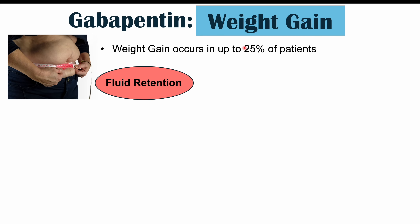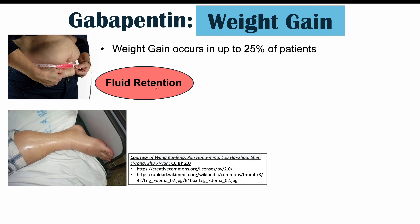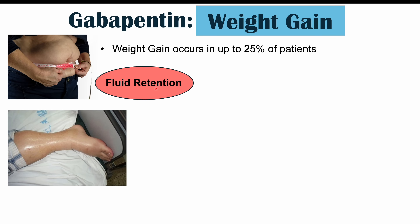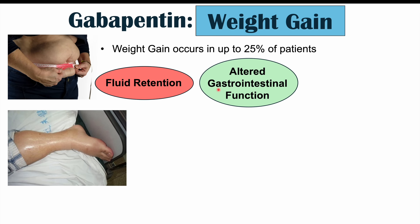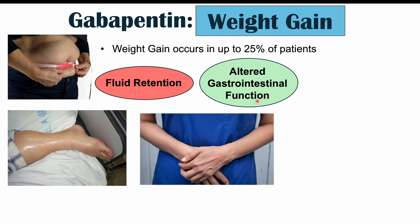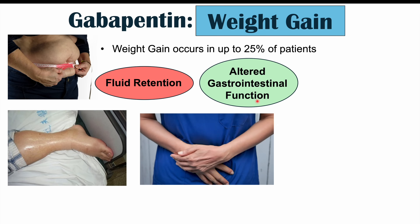Why does weight gain occur in patients taking gabapentin? There are multiple theories. One is that gabapentin may lead to more fluid retention — we do see peripheral edema in gabapentin patients. Another possible mechanism includes altered gastrointestinal functioning, perhaps through gabapentin acting on GABA systems.